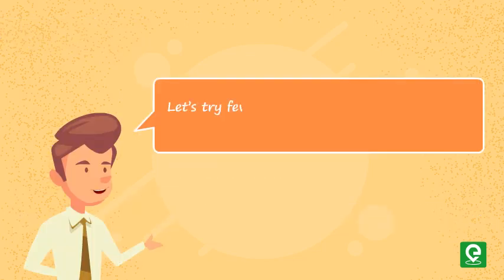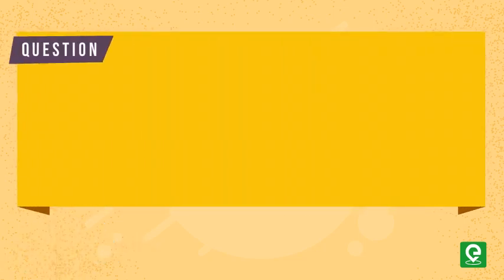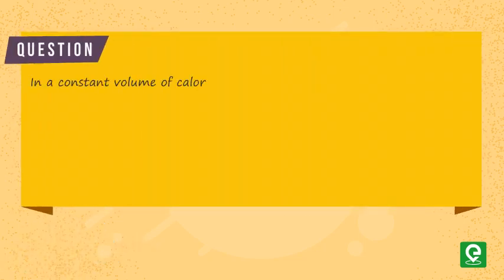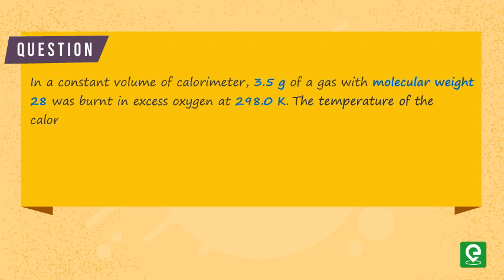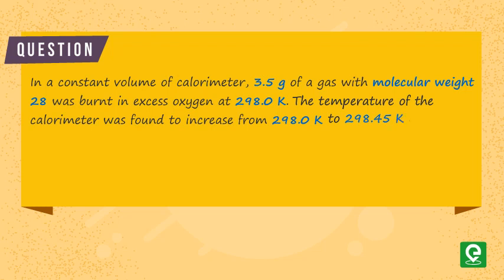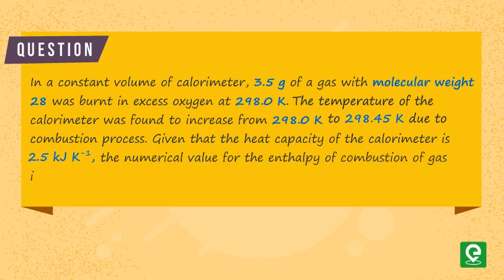Let's try an example to understand the application of heat capacity. In a constant volume calorimeter, 3.5 grams of a gas with molecular weight 28 was burned in excess oxygen at 298.0 Kelvin. The temperature increased from 298.0 K to 298.45 K. Given that the heat capacity of the calorimeter is 2.5 kilojoules per Kelvin, find the enthalpy of combustion in kilojoules per mole. This question was asked in IIT JEE 2009.